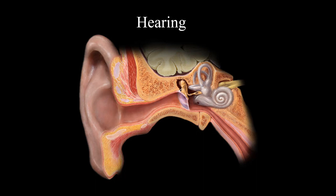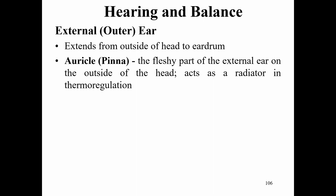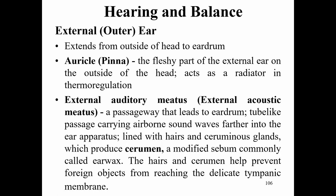Our final sense is hearing. The external ear extends from the outside to the eardrum. The auricle or pinna is the fleshy part of the external ear, which acts as a radiator in thermal regulation — that is why ears redden in cold temperatures. The external auditory meatus is a tube-like passage carrying airborne sound waves to the ear apparatus, lined with hairs and ceruminous glands producing cerumen (earwax). The hairs and cerumen prevent foreign objects from reaching the delicate tympanic membrane — so avoid overcleaning your ears.